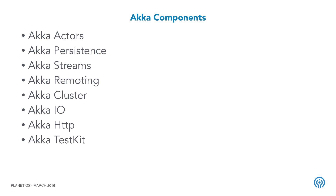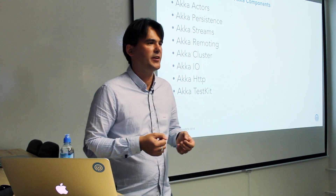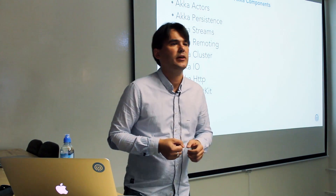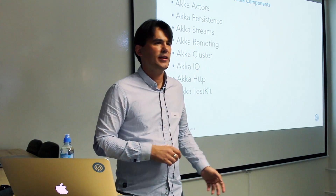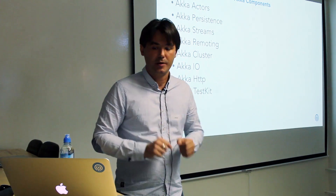Akka streams is a somewhat different approach. It uses actors to implement it, but doesn't expose actors much to you. What you operate with is streams of events, and you have a bunch of functions — map, filter, join, aggregate, and so on — to combine and modify those streams. This is called functional reactive programming. It's a very cool topic and actually has back pressure implemented via something called push-pull. We will not talk about it today, but it could be a nice presentation for another time.